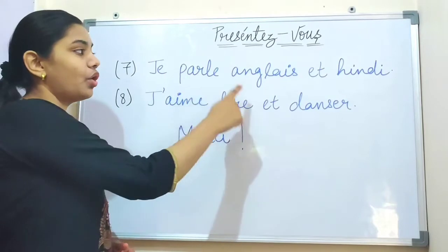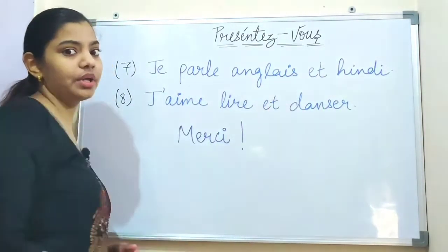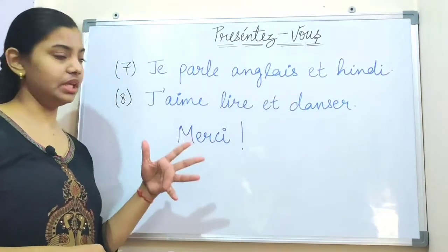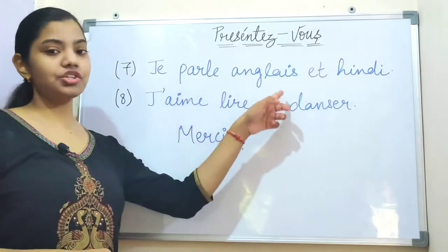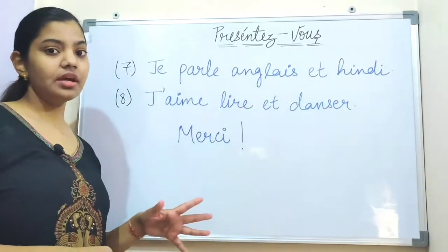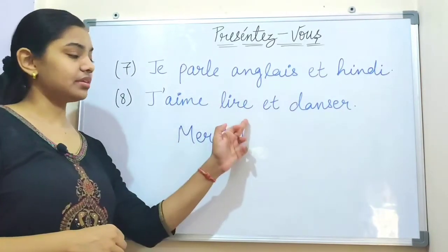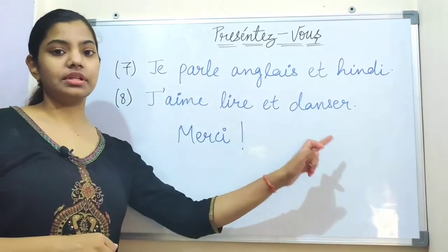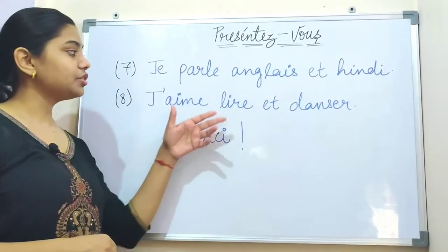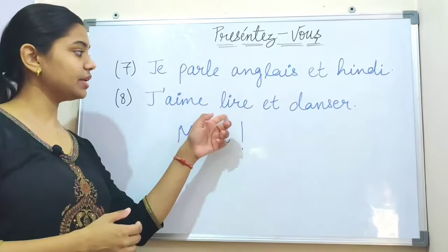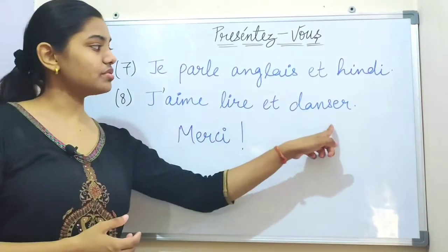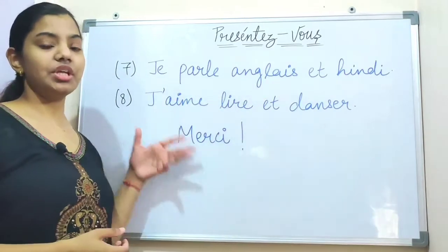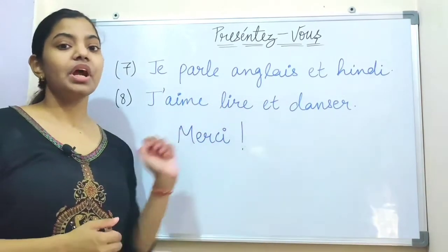Next, you say: Je parle anglais et hindi — that means 'I speak English and Hindi'. After that: J'aime lire et danser — that means 'I like to read and dance'. Lire means 'read' and danser means 'dancing'.